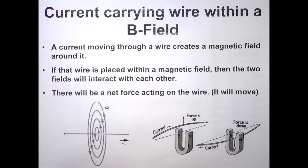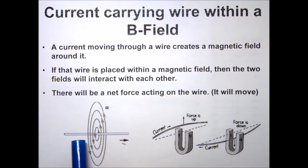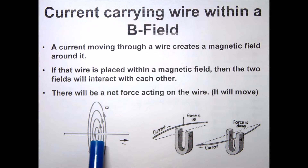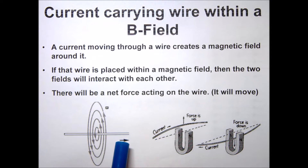Today we're going to look at what happens when we have a current-carrying wire inside a magnetic field. It's very similar — pretty much identical — to what we talked about last time, where if you have a current moving through a wire, current is just moving charges, and so just like with moving charges you're going to get a magnetic field around the wire.